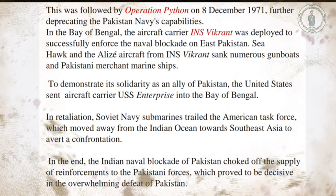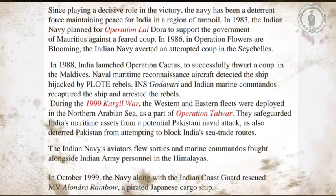After Operation Trident, Operation Python was launched on 8th December. In the Bay of Bengal, aircraft carrier INS Vikrant was deployed to enforce the naval blockade on East Pakistan. In 1988, during Operation Cactus, the Indian Navy successfully thwarted a coup in Maldives — naval maritime reconnaissance aircraft detected a hijacked ship, and INS Godavari with marine commandos recaptured the ship and arrested the rebels. During the Kargil War, the Western and Eastern Fleets deployed in the northern Arabian Sea under Operation Talwar, safeguarding India's maritime assets and deterring Pakistan from blocking sea trade routes.